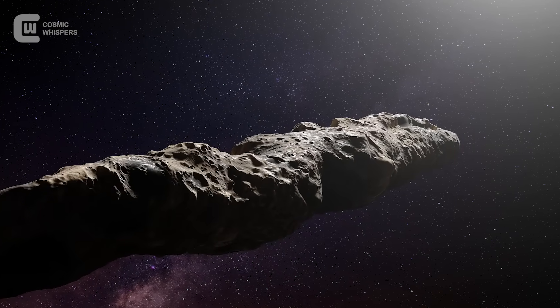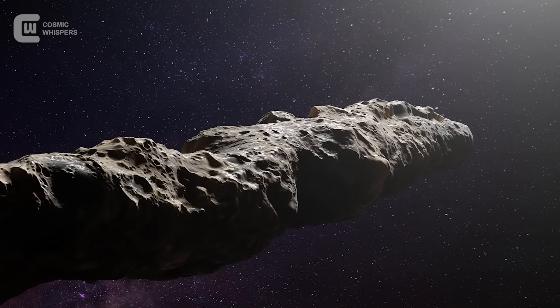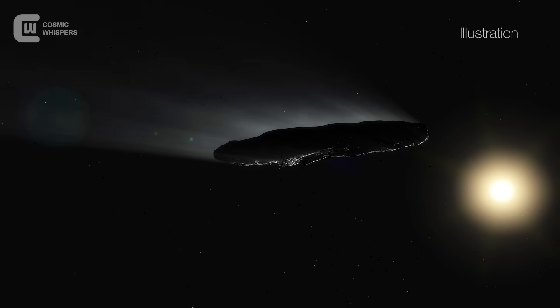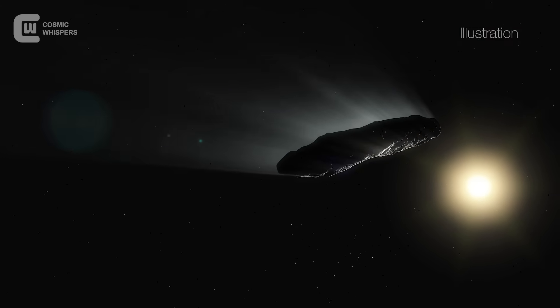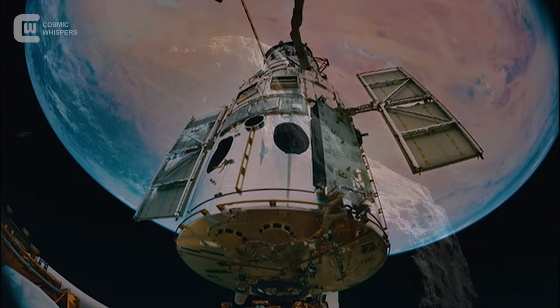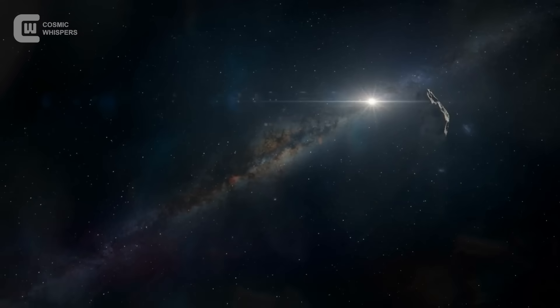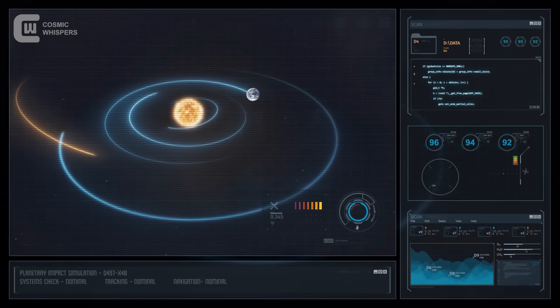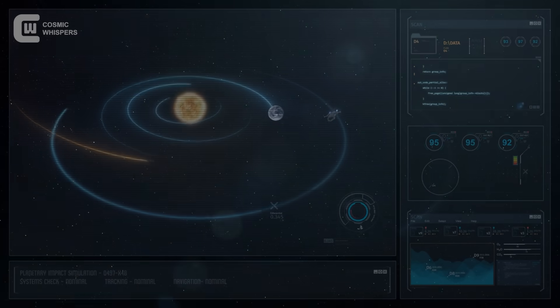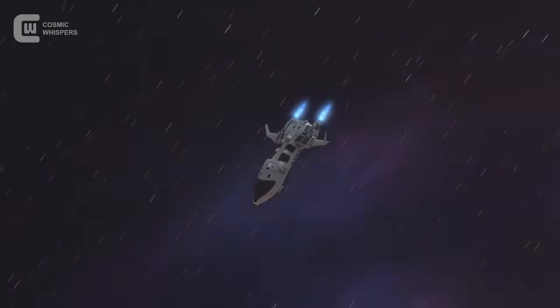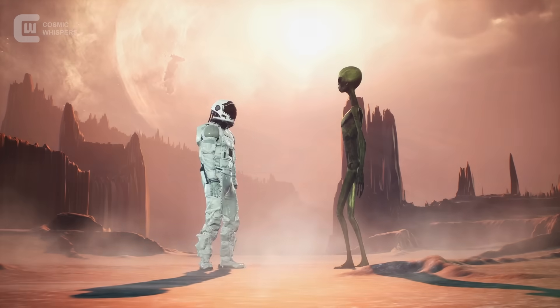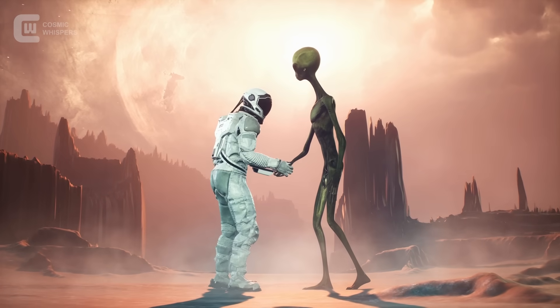In this video, we'll retrace the mystery of Oumuamua. From the moment it was spotted in 2017 to the bizarre behavior it showed, the controversial theories it inspired, the latest scientific findings in 2025. And finally, to humanity's boldest plan yet. A real mission called Project Lyra, designed to chase Oumuamua across the stars. This is the story of a cosmic visitor, and what it might have been trying to tell us.